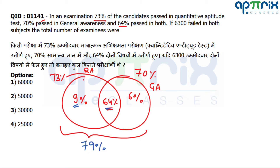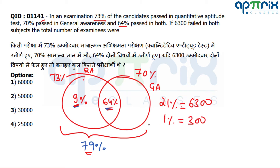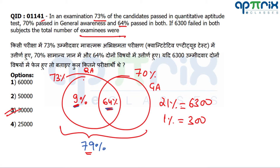79% are those students passing in at least one subject. The remaining 21% have failed in both subjects, which equals 6,300. So 1% equals 300, and therefore 100% — the total number of examinees — is 30,000. There is no need to use the formula with n(A), n(B), and all that. Just visualize and get the answer.